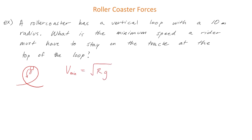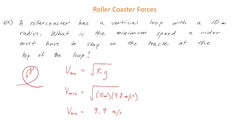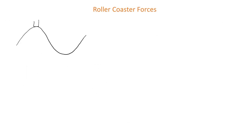The minimum speed equals √(rg), so we plug in the radius and g = 9.8 m/s². We find that the minimum speed is about 9.9 m/s. The roller coaster must go at least that fast for the rider to stay on the track.